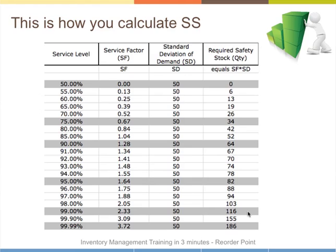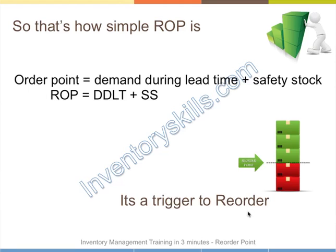You can see the advantages of using a table like this to determine your safety stock requirements, and you can evaluate the implication of high customer service levels on your inventory holding. So that's how simple a reorder point is — it's the demand during the lead time plus the safety stock, just a trigger for you to reorder your stock.